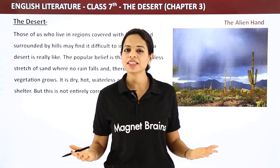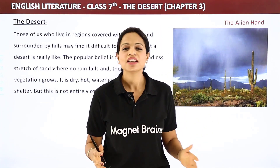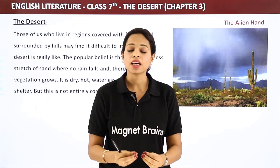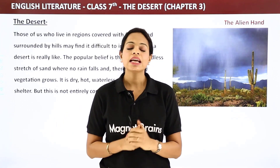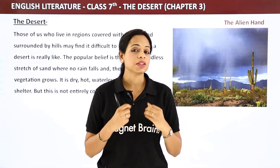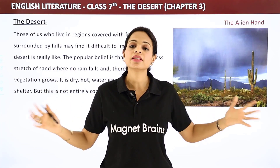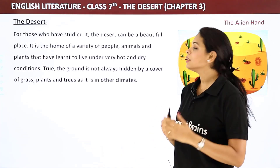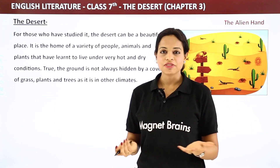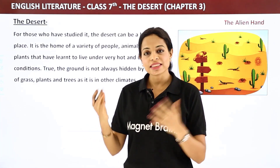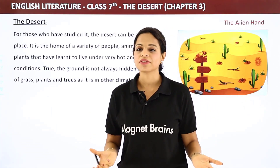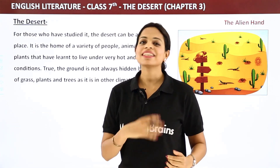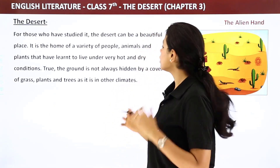Yes, there are places which are just as per our imagination, but not every desert is like that. For those who have studied it, the desert can be a beautiful place. People go to Dubai — there is a desert there as well. We go to Ladakh — that's a cold desert. Log agar jaate hain desert ghoomne, toh unka dimaag kharaab nahi hai — desert can be a beautiful place. It is the home of a variety of people, animals and plants that have learned to live under very hot and dry conditions.